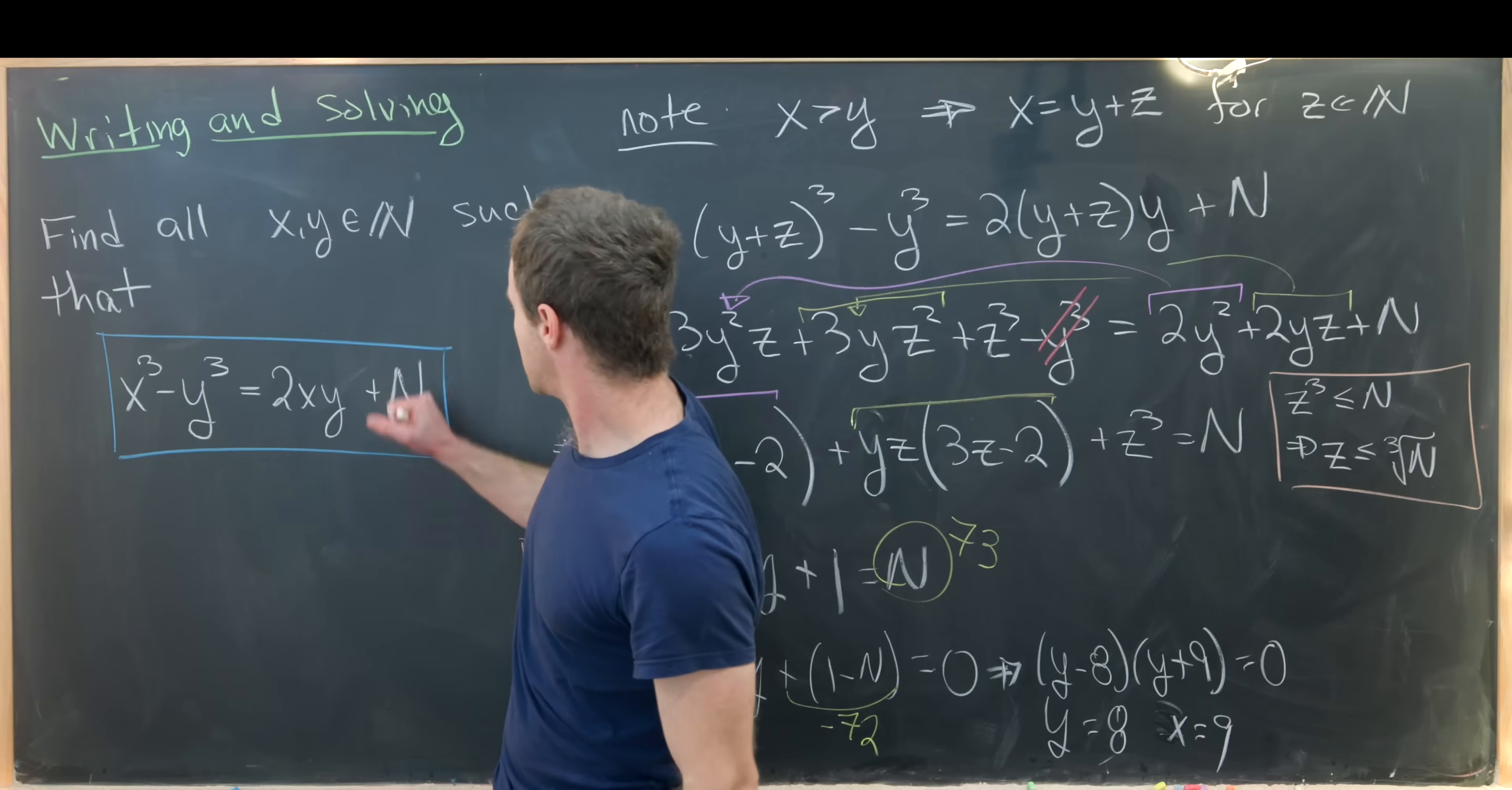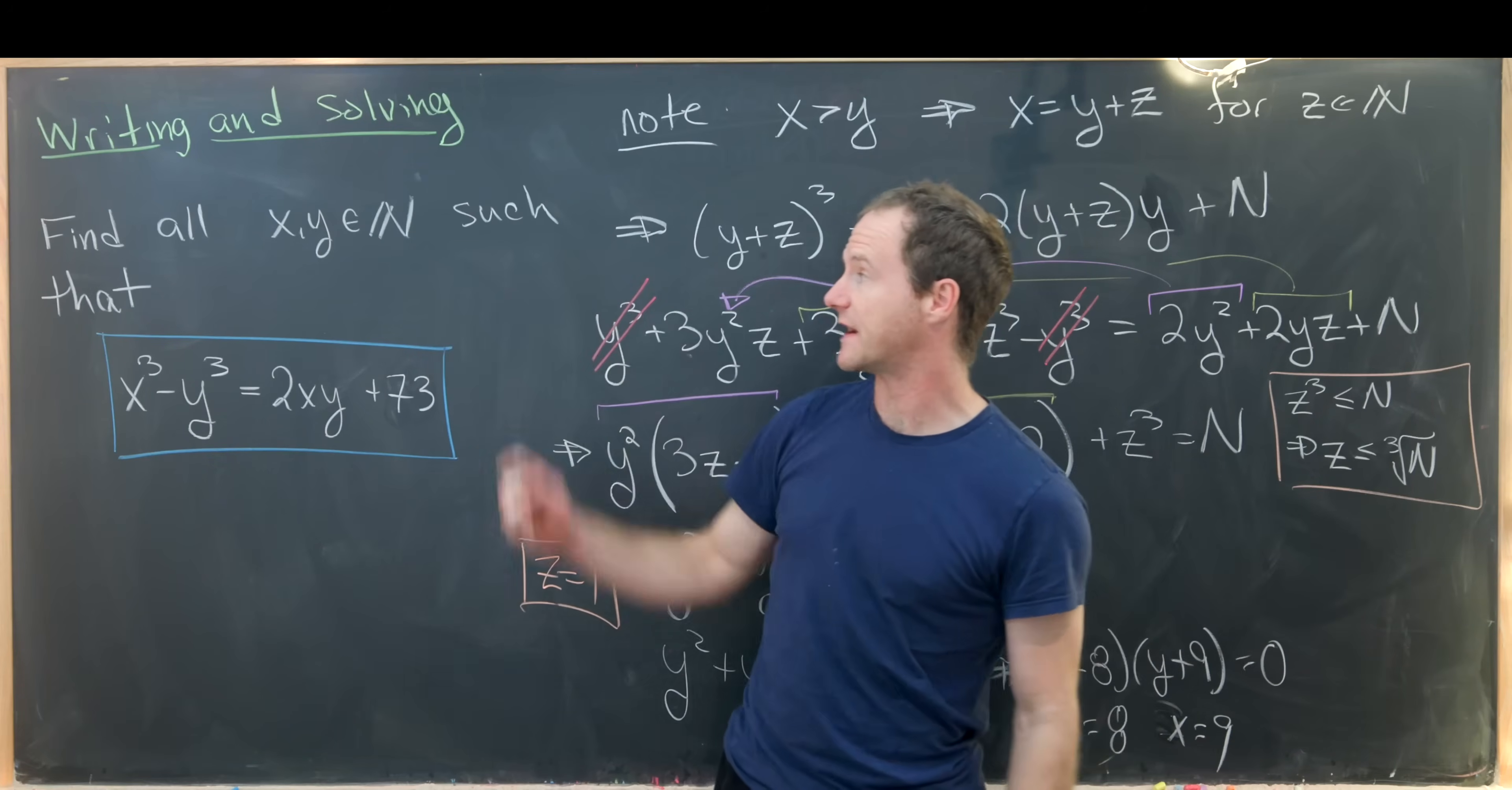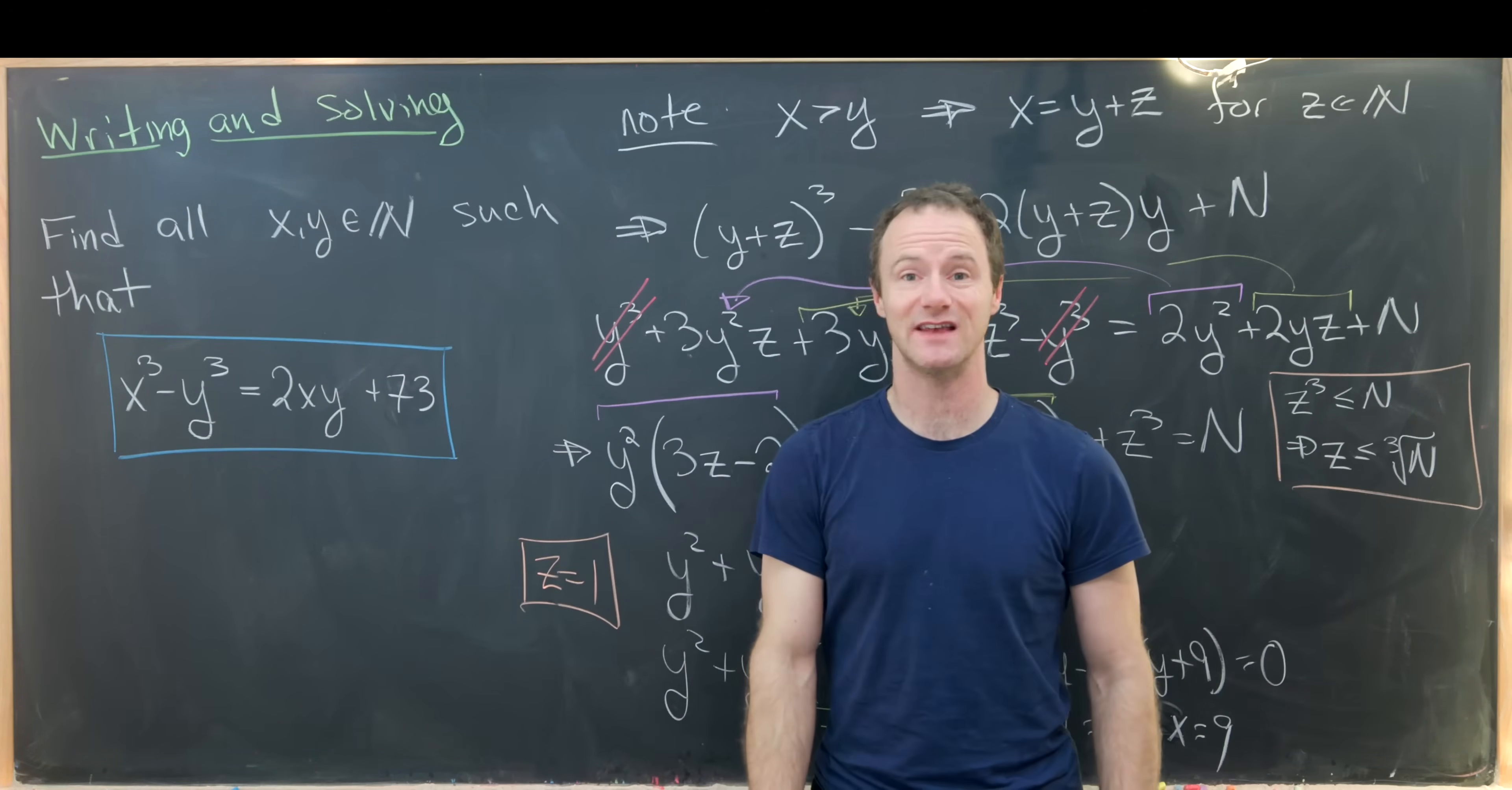And now from here let's say that we have finished writing our problem. So let's say our problem is finished writing as: find all x and y in the natural numbers such that x³ - y³ = 2xy + 73.